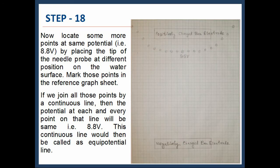If we join all those points by a continuous line, then the potential at each and every point on that line will be the same, that is 8.8 volts. This continuous line would then be called an equipotential line.